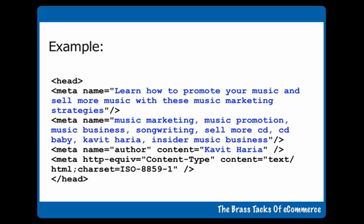Here's an example. For the description I've put: 'Learn how to promote your music and sell more music with these music marketing strategies.' That is the description — if somebody goes to my website, that is the description they will see. The meta keywords include: music marketing, music promotion, music business, songwriting, sell more CDs, CD Baby, Kavith Haria, insider music business. And then the author name has my name there.